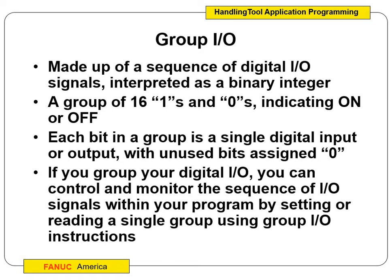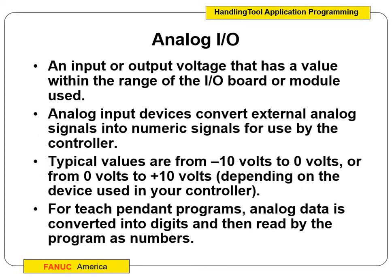We have group I/Os — that's a sequence of digital input and output signals that we interpret as binary numbers. If you remember back to digital electronics, ones and zeros — we went zero-one, or zero-zero-zero-one-one-zero-one-one, or zero-zero-zero through one-one-one, so on and so forth. We had those strings of binary numbers. Each bit in the group is a single digital input or output, with unused bits assigned zero. We'll take a look at a little bit of that here in a moment.